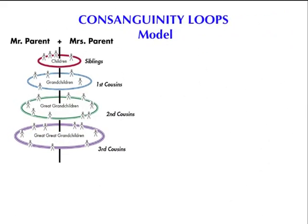So I came up with another model. I call this my Consanguinity Loops model. We start with the original parents, Mr. and Mrs. Parent. They have children who are siblings to one another. When the siblings have children, they are the grandchildren to the original couple, and unless the grandchildren are siblings, they are first cousins to each other. When the first cousins have children, they are the great-grandchildren of the original couple, and unless those great-grandkids are siblings, they are now second cousins to one another. When the second cousins have kids, they are the great-great-grandchildren, and on and on.